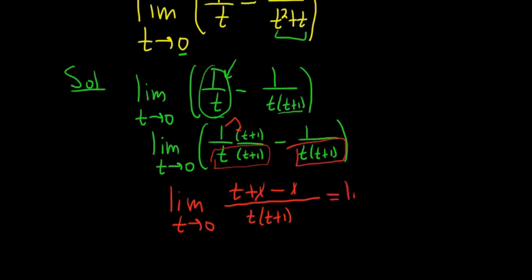So this equals the limit as t approaches 0 of t over t times t plus 1. The t's cancel. Beautiful stuff. We get the limit. I always have to write that limit until the very end, right when you plug in the number. So 1 over t plus 1.